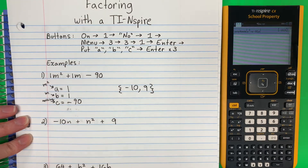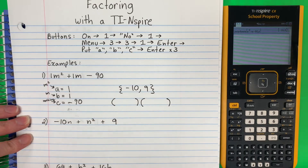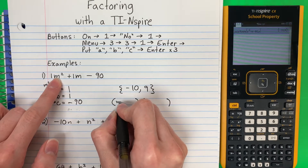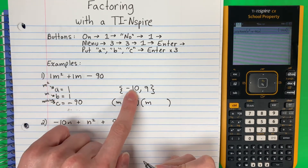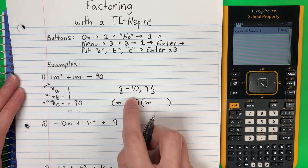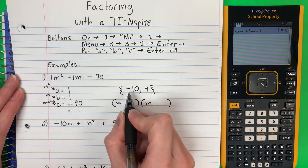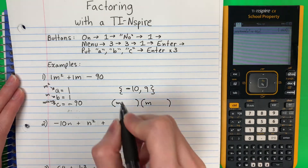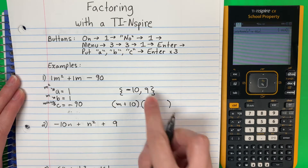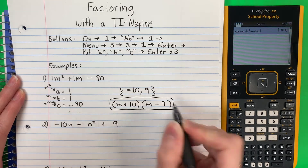How do I factor this? I need to do two pairs of parentheses — dos pares de paréntesis. What letter is this? M. So I will put M and M. I'm going to put this number here and this number here, but opposite — pero el opuesto. What's the opposite of negative 10? And negative 9. So this is how it looks factored.